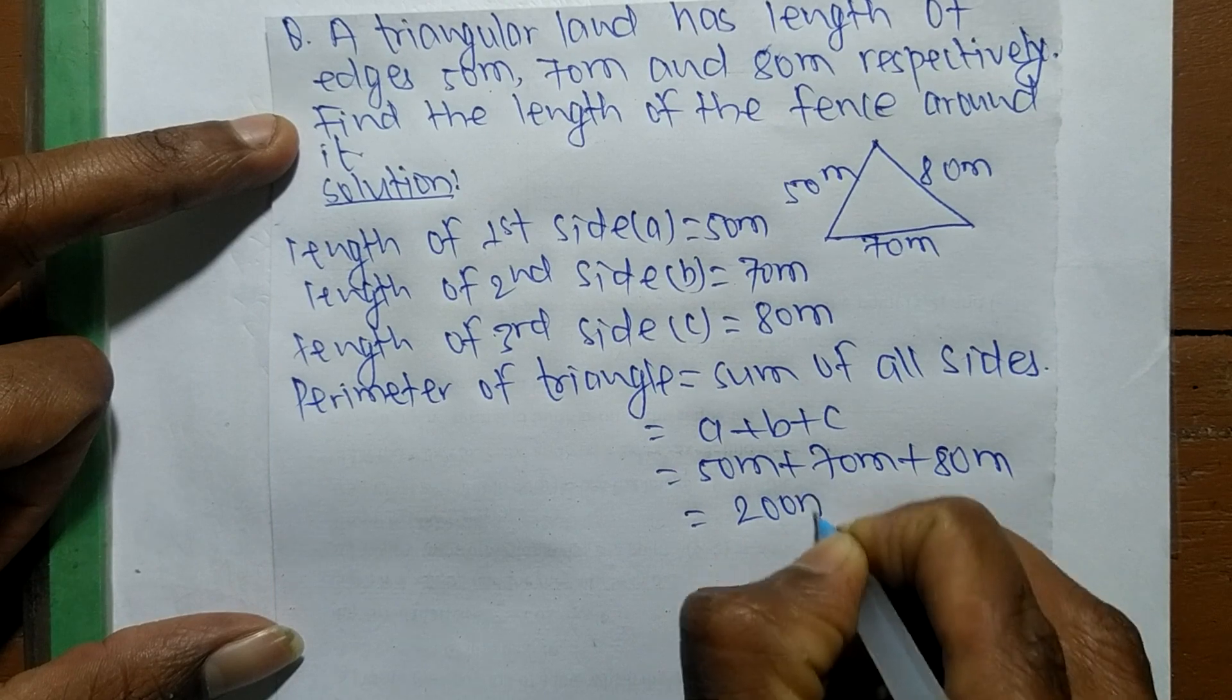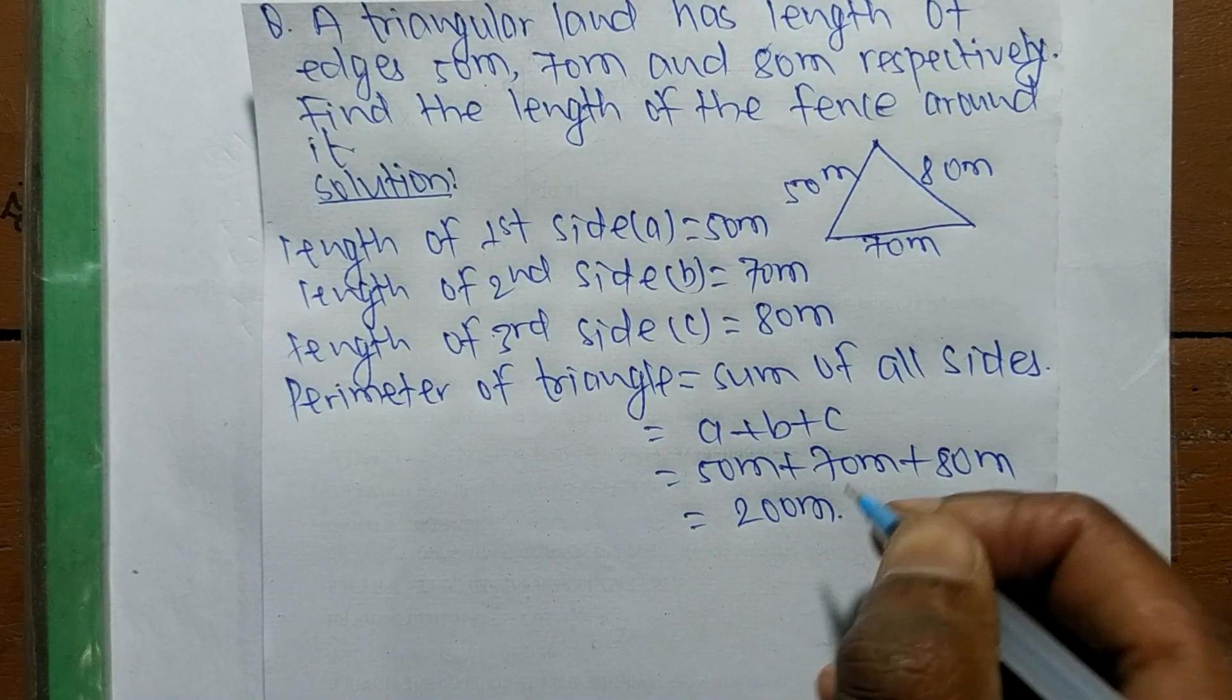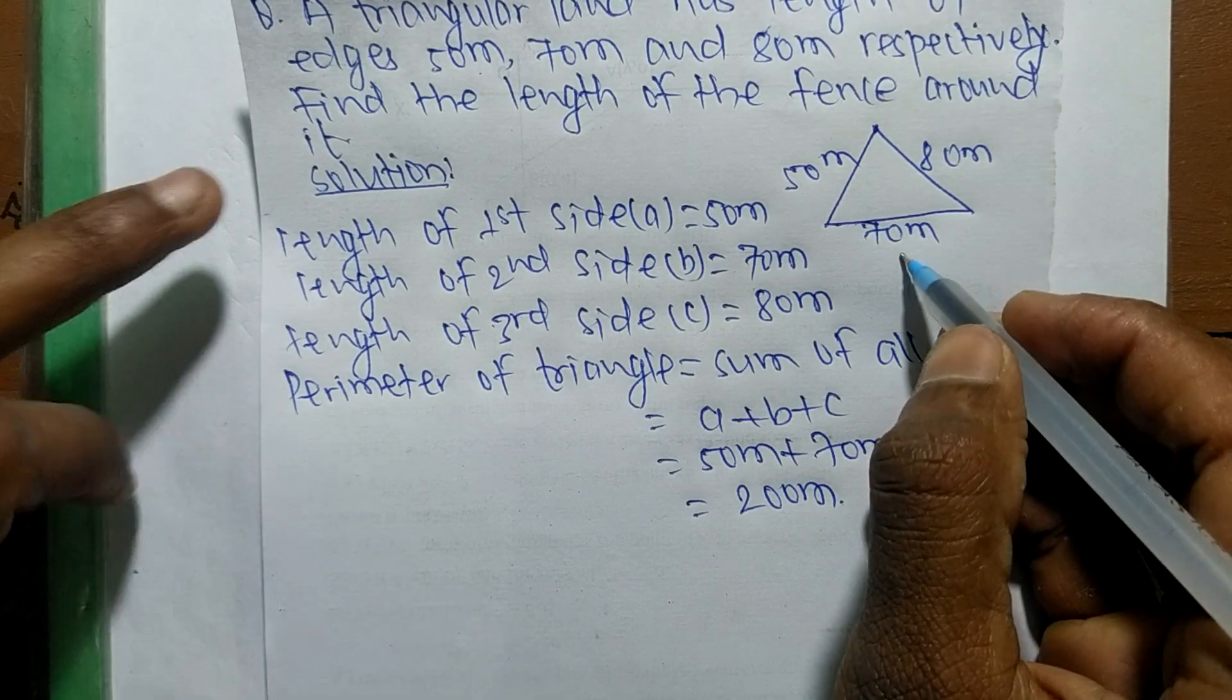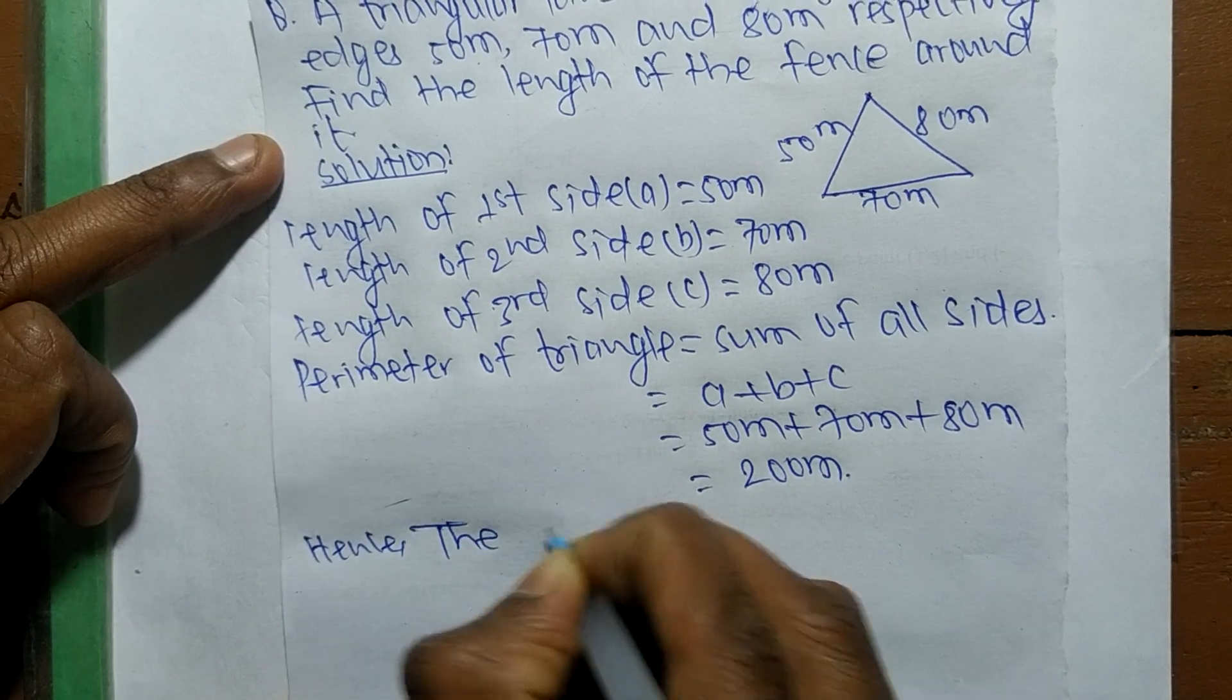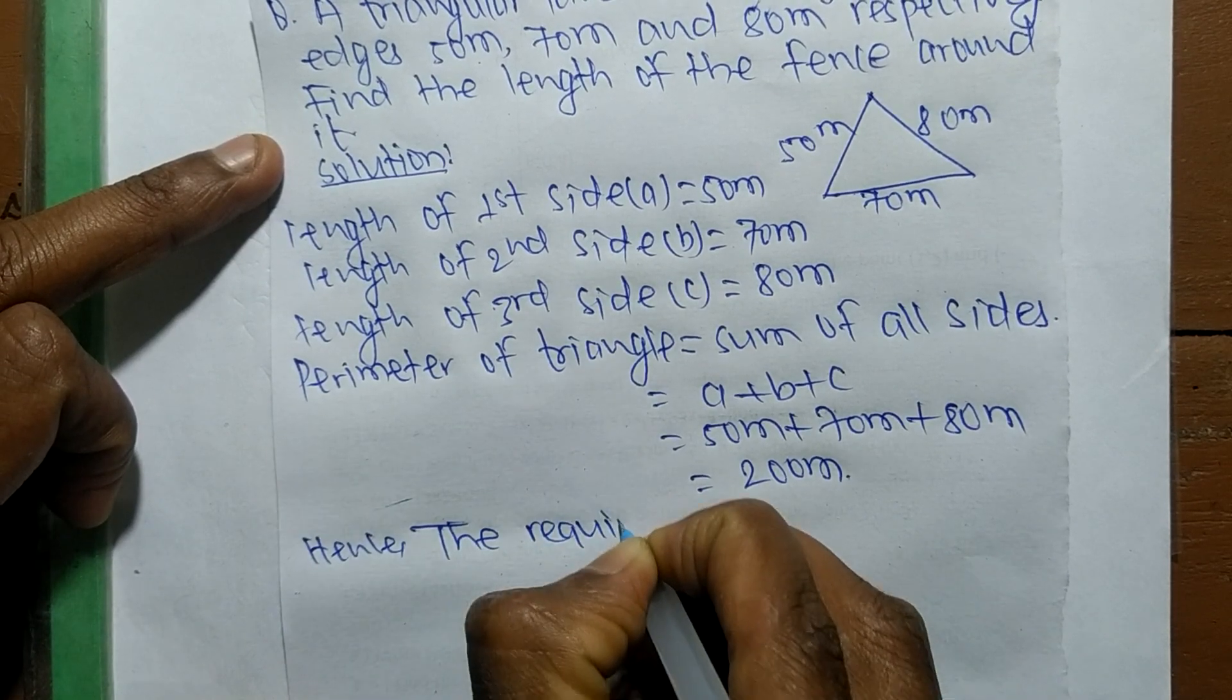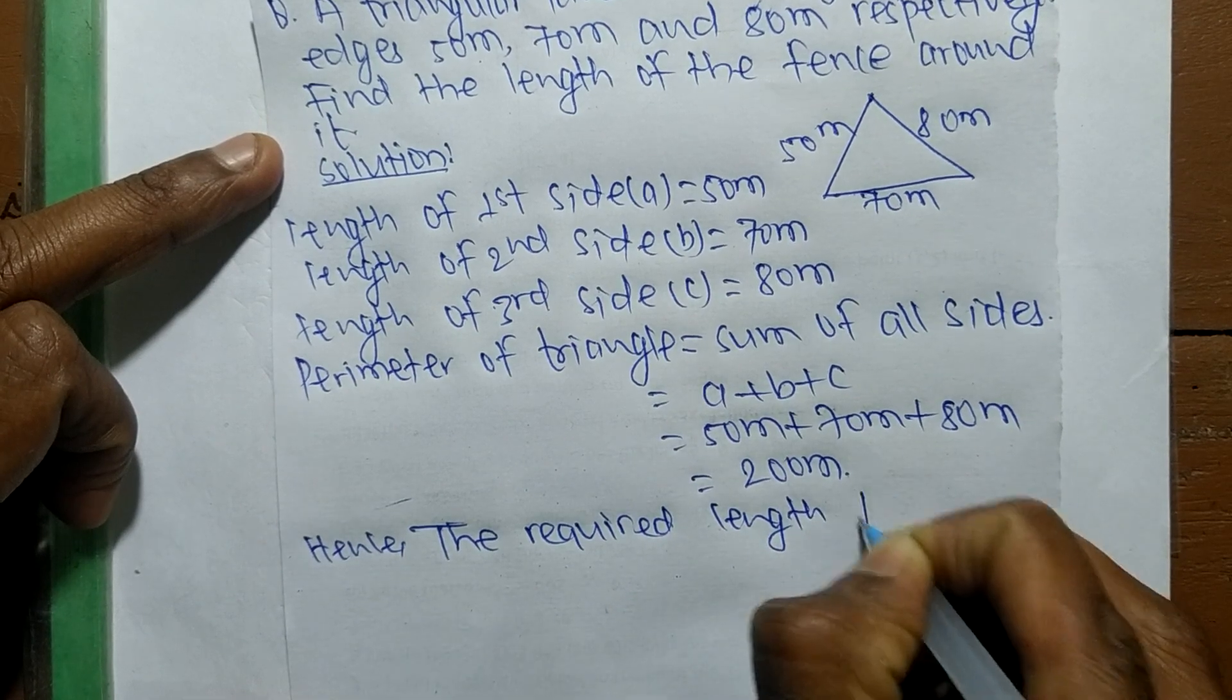we get 200 meter. So 200 meter is the perimeter of this triangular land. Hence, the required length to fence around